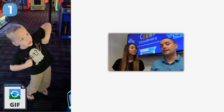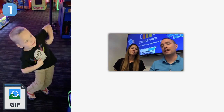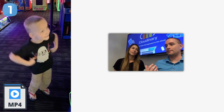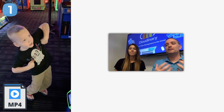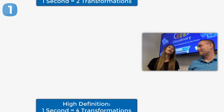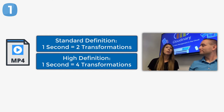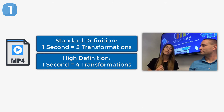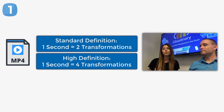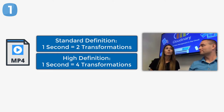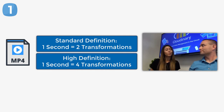Cloudinary also lets you convert those animated GIFs to become a video, like an MP4 as an example. In that situation the frame transformation ratio is a little different depending on what video format you want to convert to. For SD videos, one second equals two transformations, and for HD videos, one second equals four transformations. So you really have to count that depending on the length, because it could add up a bit.